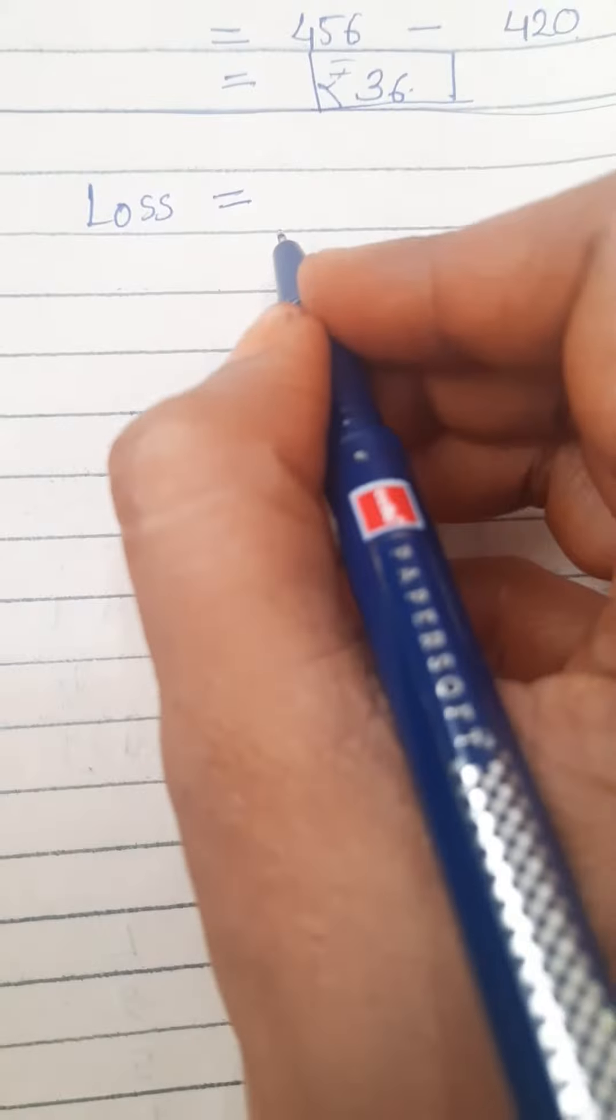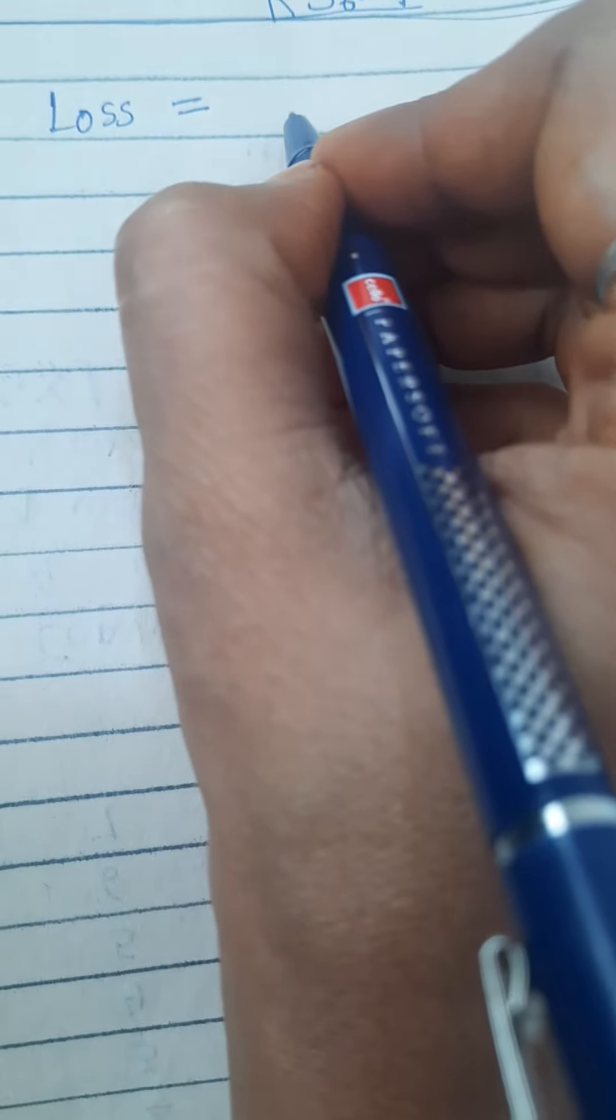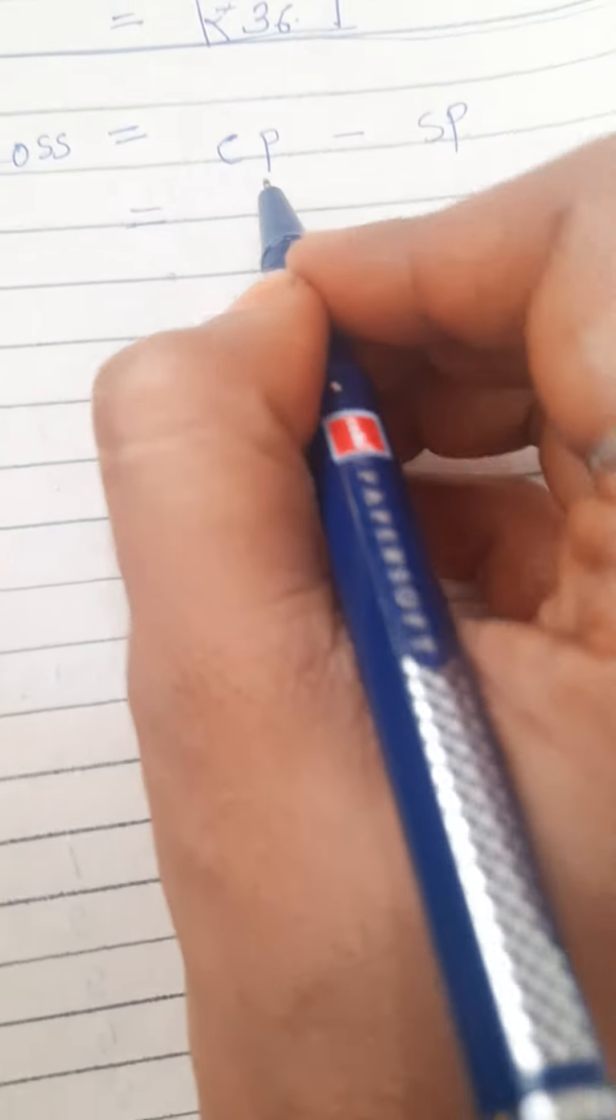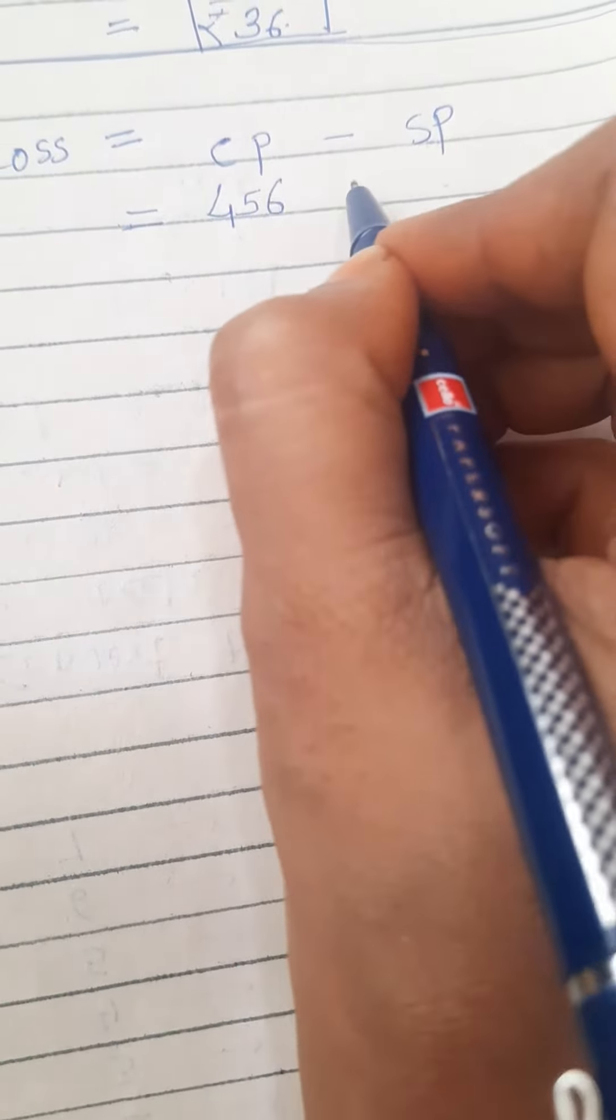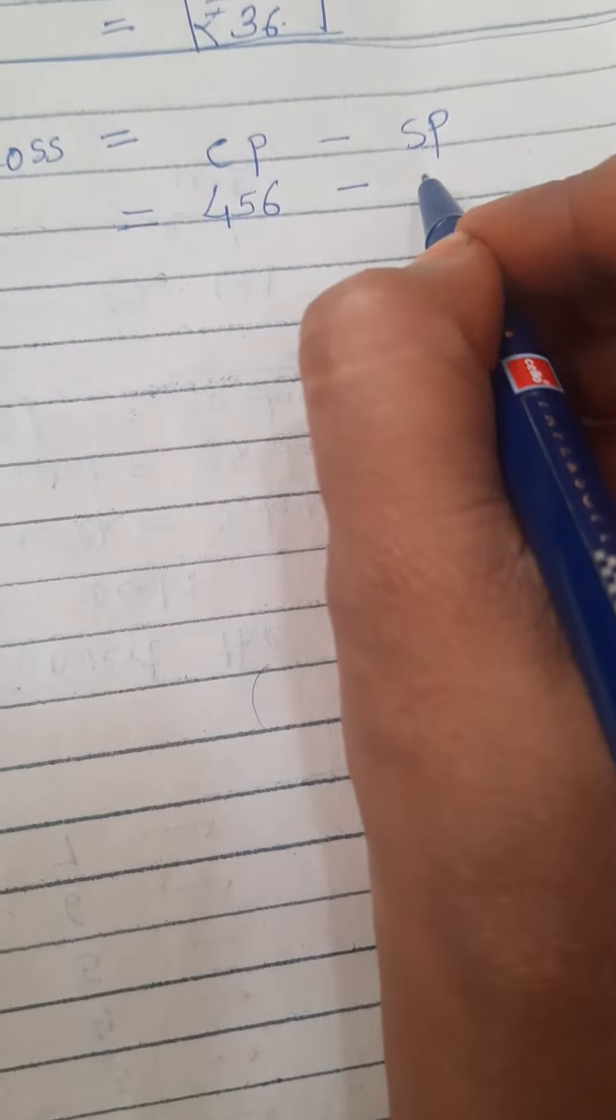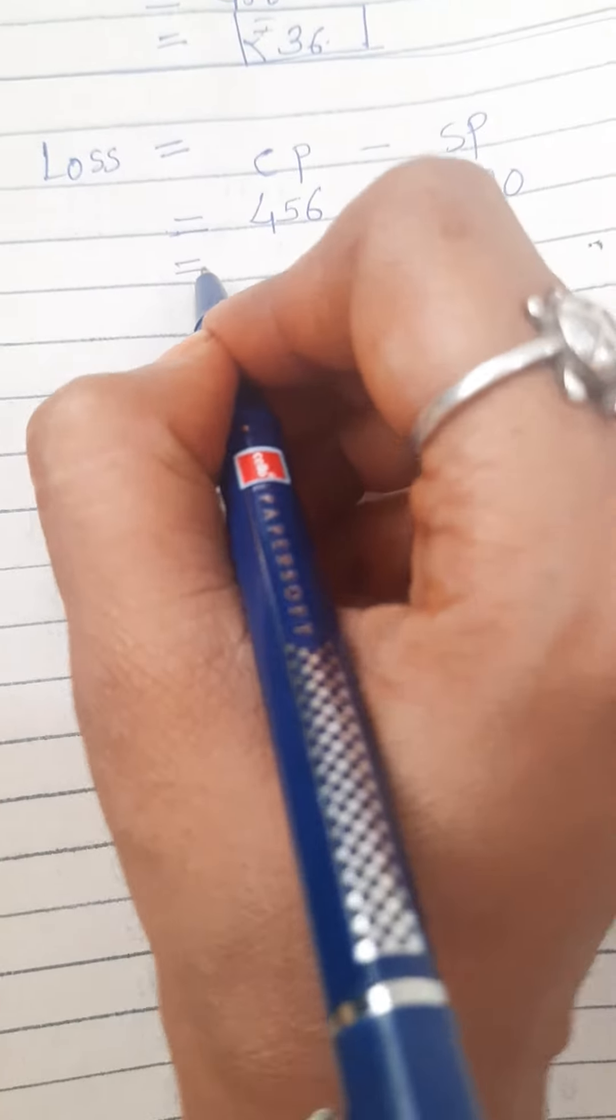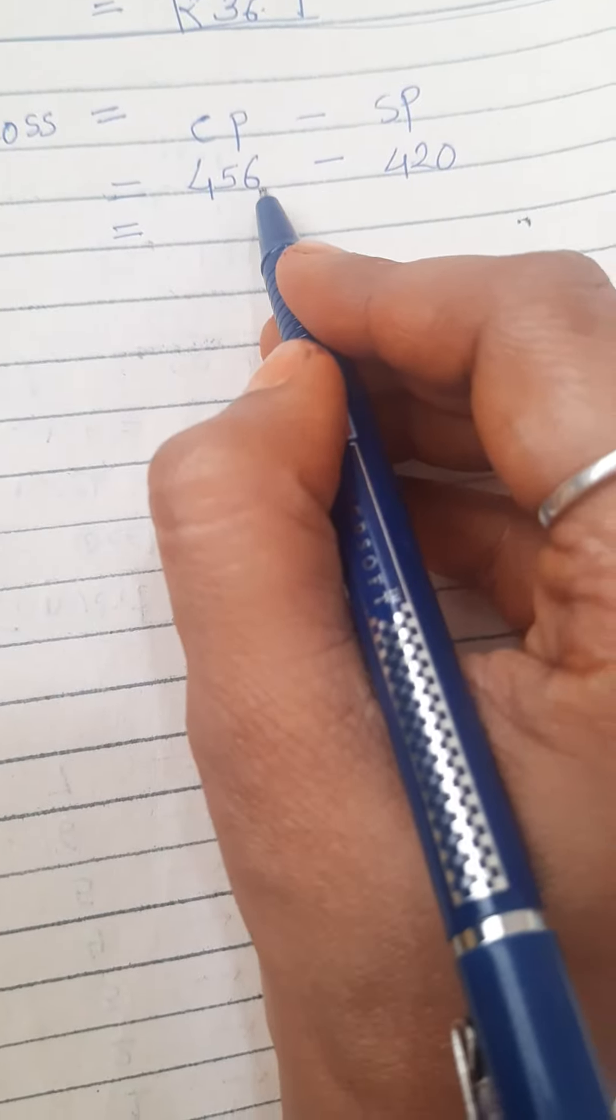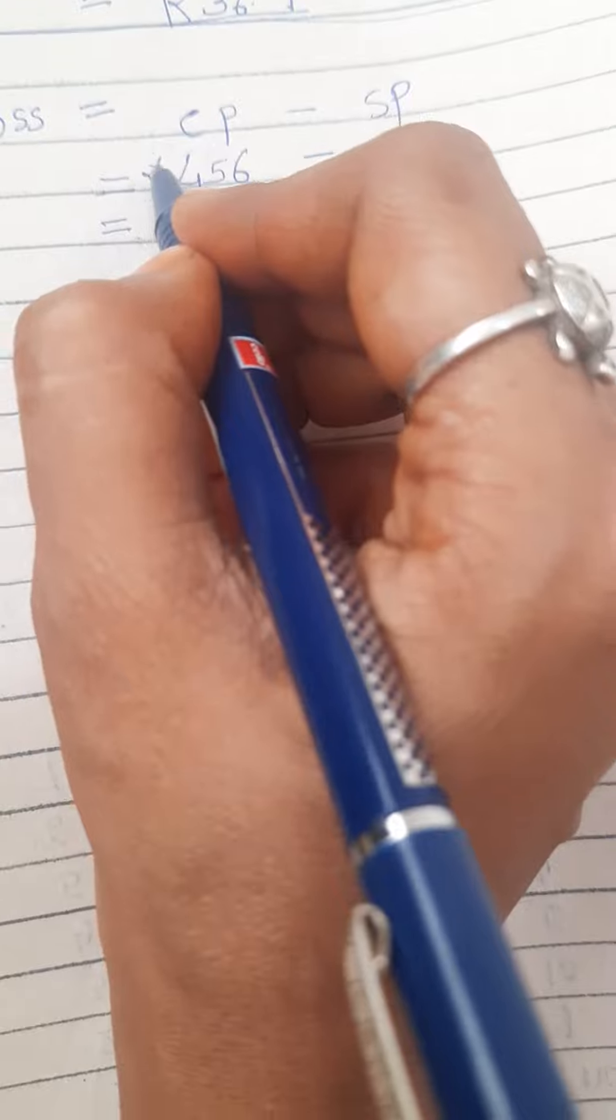First write down the structure: Loss is equal to CP minus SP. Okay, they give us CP that is 456 minus SP is equal to 420. Then just subtract that 456 minus 420. The symbol of rupees is very important also.